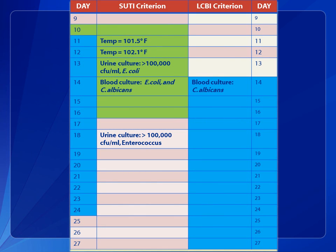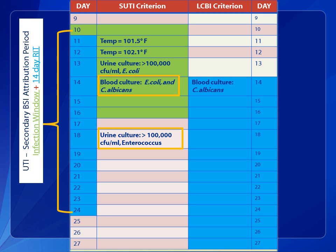In this example, a urine culture is collected on day 18, which is within the SUTI repeat infection time frame. A new pathogen, Enterococcus, is identified. Because the culture was collected within the SUTI repeat infection time frame and Enterococcus is an eligible pathogen, it is assigned to the originally reported SUTI. Additionally, a blood culture collected during the SUTI secondary BSI attribution period on hospital day 14 was found to be positive with pathogens E. coli and C. albicans. Because C. albicans is an excluded pathogen for the UTI definition, it cannot be assigned as a secondary BSI to the SUTI. Instead, other primary sources for the C. albicans BSI must be considered according to the secondary BSI guide.